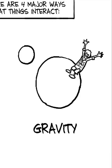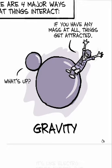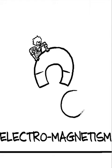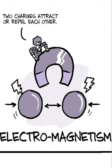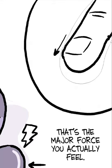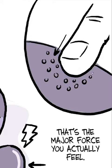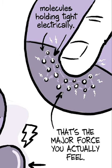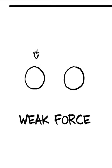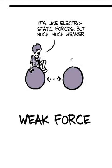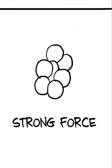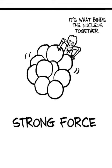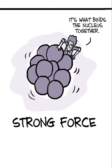There's four major ways that things interact. There's gravity. If you have any mass at all, things get attracted. There's electromagnetism, like two charges repel each other. That's the major force that you actually feel. If I press down on this table, the reason the table doesn't get crushed or pushes back is that the molecules inside the table are holding tight on each other electrically. There's another force called the weak nuclear force. And then there's a fourth force, which is called strong interactions. It's inside the nucleus. It's what binds the nucleus together.